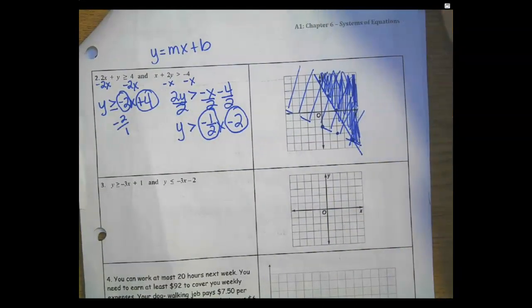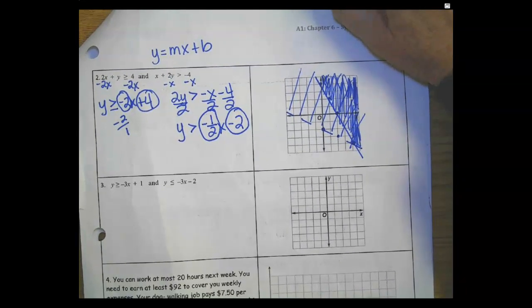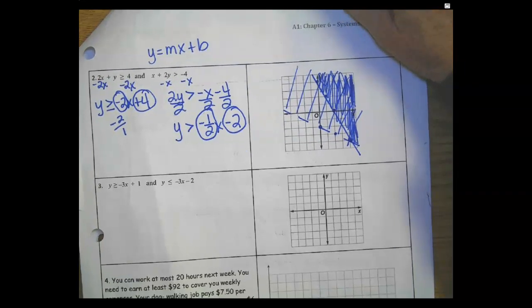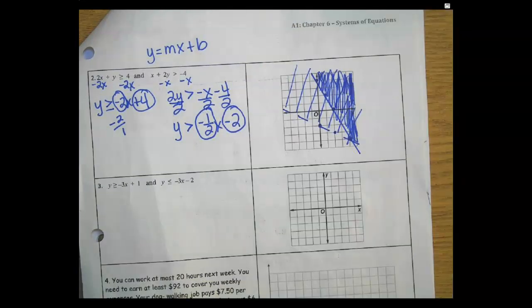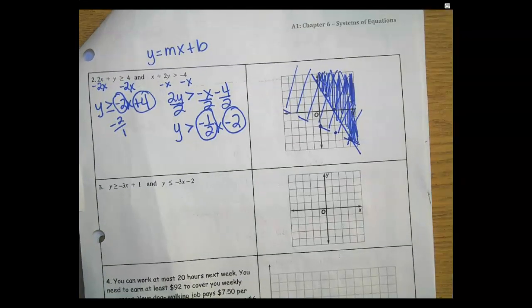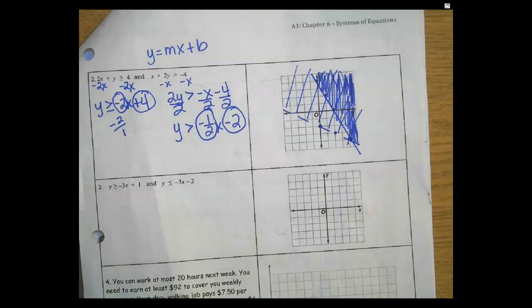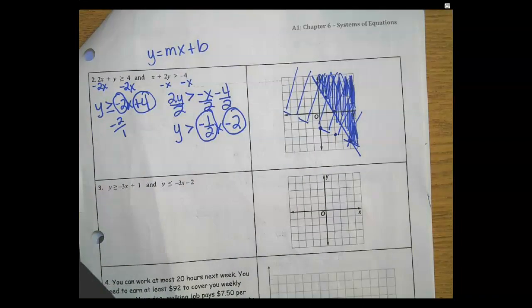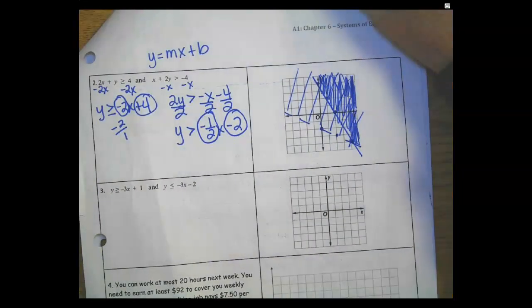If you click on that little keyboard, it'll give you the greater than or equal sign, and then you can type in your negative 3x plus 1. On your next one you're going to say y is less than or equal to negative 3x minus 2.